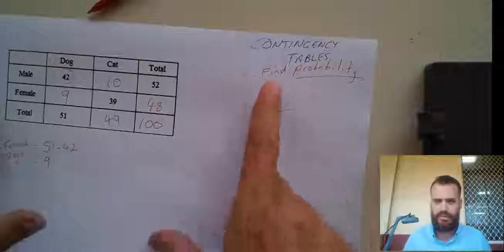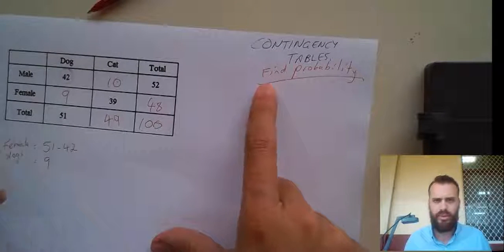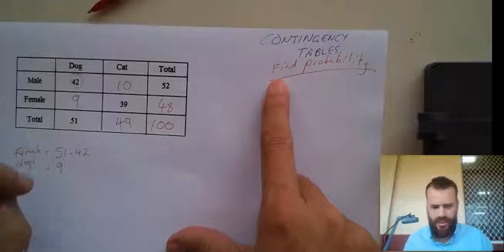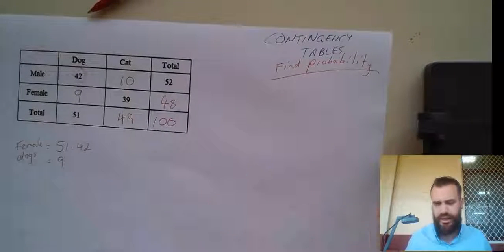Okay, so I'm still talking about contingency tables here. This time I'm finding the probability from a contingency table. It's already complete. I've got all of my information. I can get started.